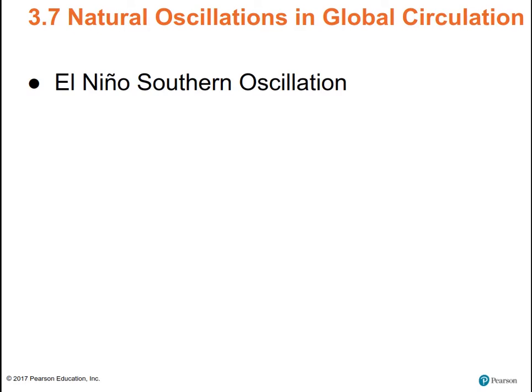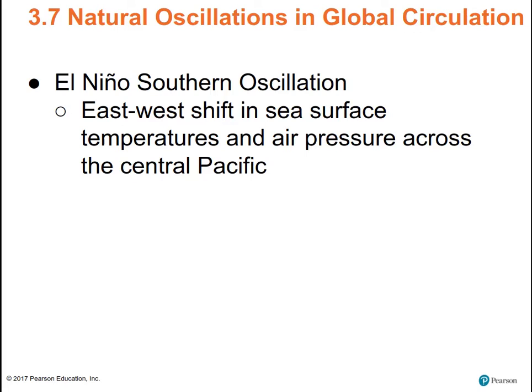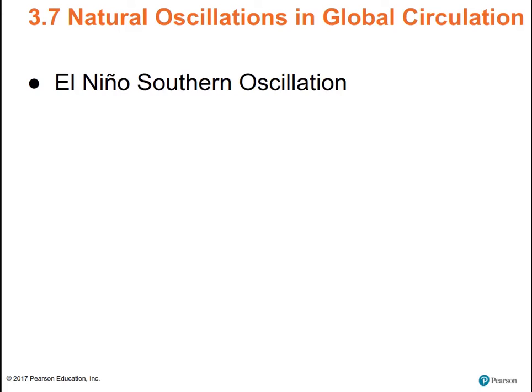Natural oscillations in global circulation — we're going to talk about El Niño, the El Niño Southern Oscillation. It is an east-west shift in sea surface temperatures and air pressure across the Central Pacific. The low pressure and warm temperatures in the west move to the east, and the cold temperatures and high pressures in the east move west. There's El Niño, the warm phase when the eastern Pacific gets warmer, and La Niña, the cold phase.